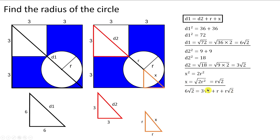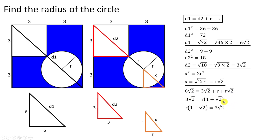Substituting into the equation d1 = d2 + r + x, we get 6√2 = 3√2 + r + r√2. Moving 3√2 to the left side and factoring out r gives 6√2 − 3√2 = r(1 + √2), which is 3√2 = r(1 + √2). Rearranging, the radius r = 3√2 / (1 + √2).